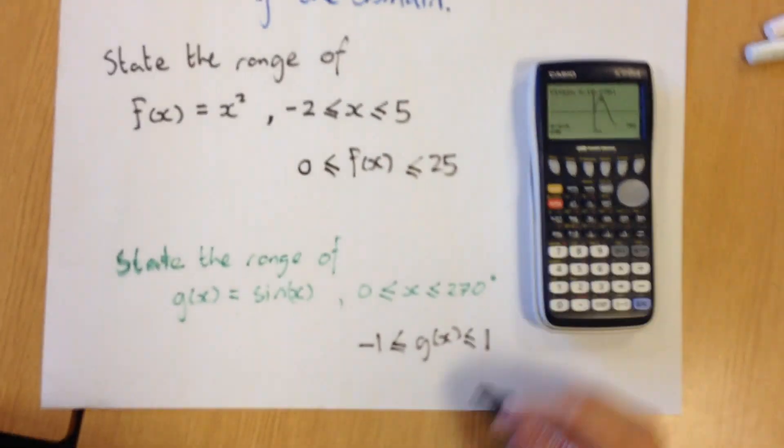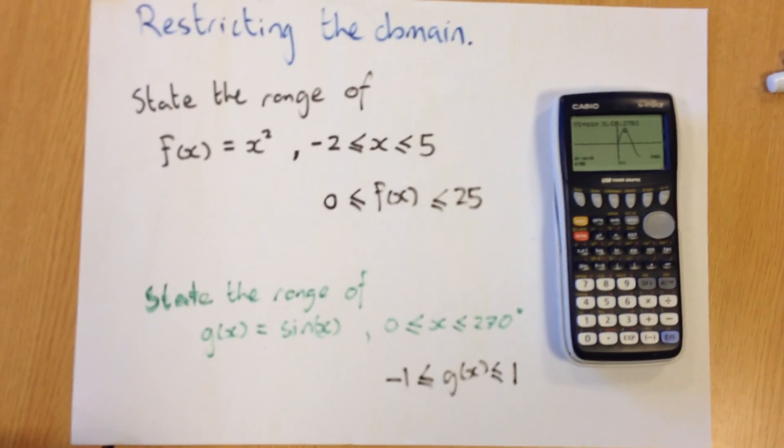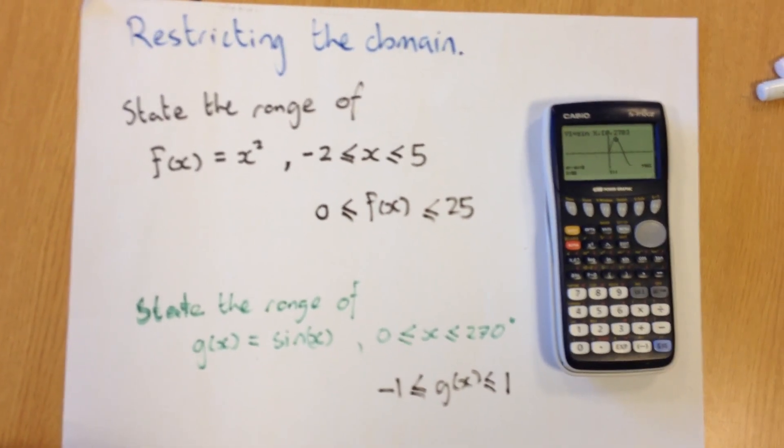So there we go. g of x is between minus 1 and 1. And that's how we restrict the domain on the graphics calculators.